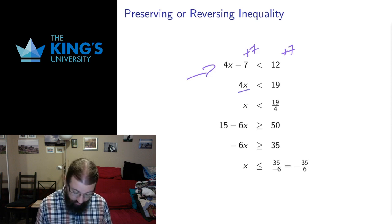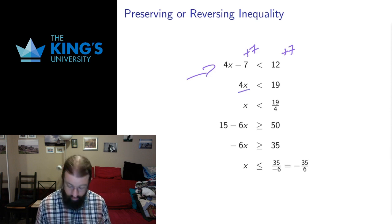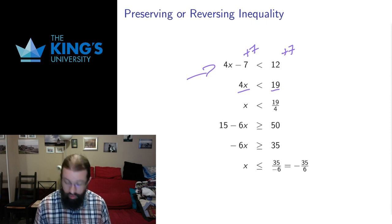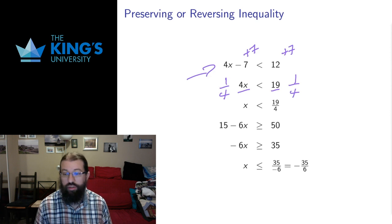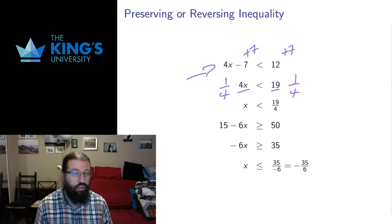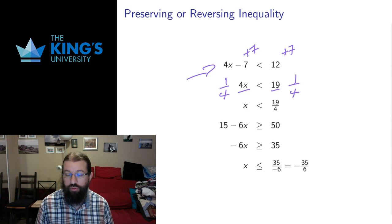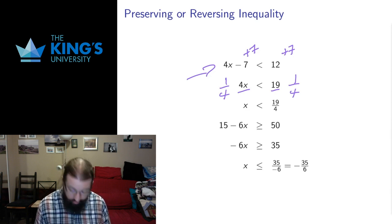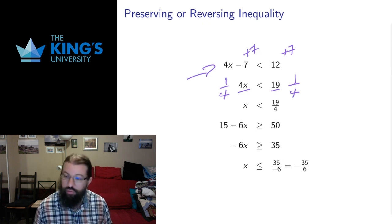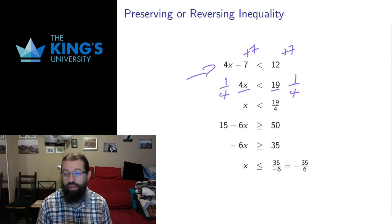If I add 7, I get 4x on the left and 19 on the right. Then I can divide both sides by 4. Dividing or multiplying by a positive number preserves inequalities, so this is valid. The 4 cancels off on the left, and I end up with x less than 19/4.